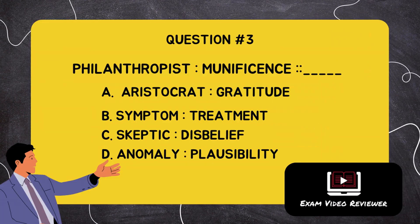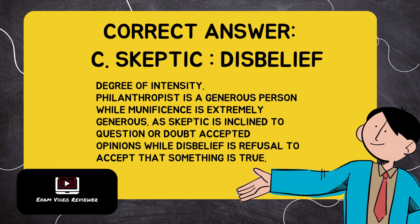Question number three: philanthropist is to munificence as blank. Letter A: aristocrat is to gratitude, Letter B: symptom is to treatment, Letter C: skeptic is to disbelief, Letter D: anomaly is to plausibility. The correct answer is Letter C, skeptic is to disbelief. The degree of intensity: philanthropist is a generous person while munificence is extremely generous; similarly, a skeptic is inclined to question or doubt accepted opinions while disbelief is a refusal to accept that something is true.